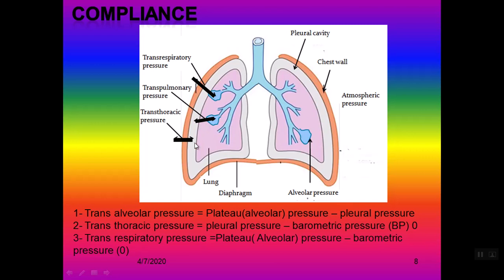Trans-alveolar pressure is for measurement of the lung compliance alone. When we come to trans-thoracic pressure, this is the difference between esophageal pressure minus barometric pressure, measured during inspiration minus during expiration. This is for the measurement of chest wall compliance.